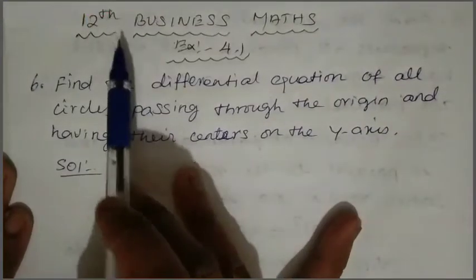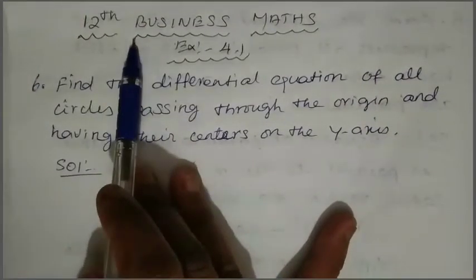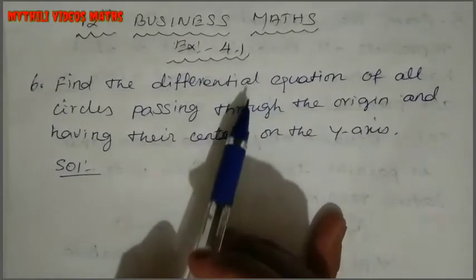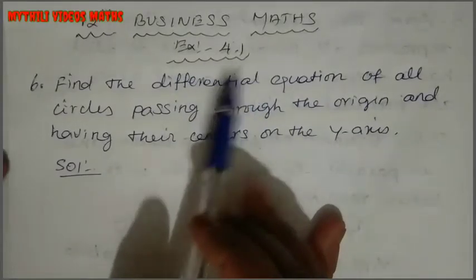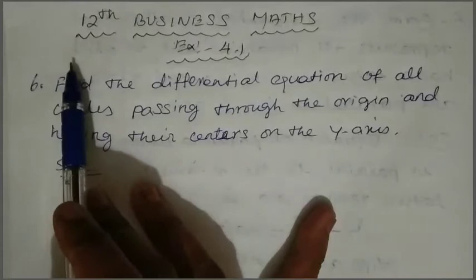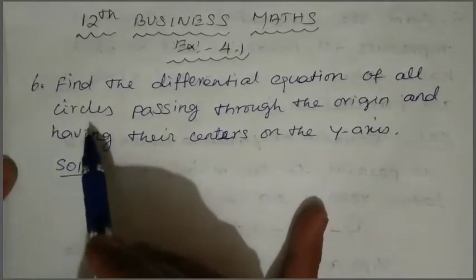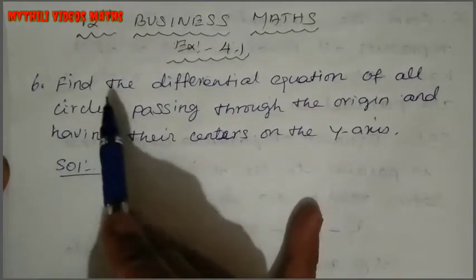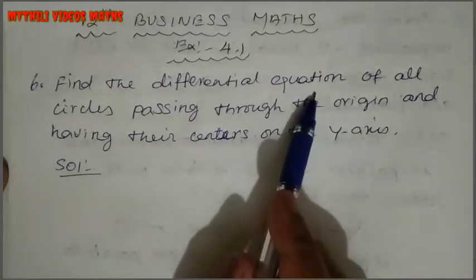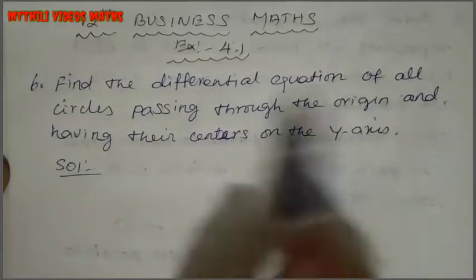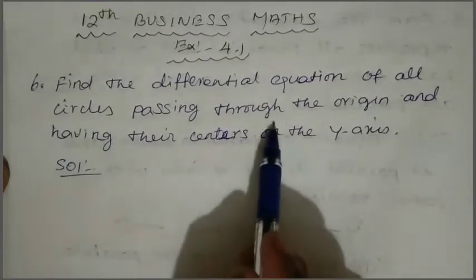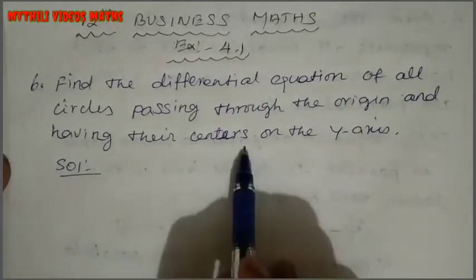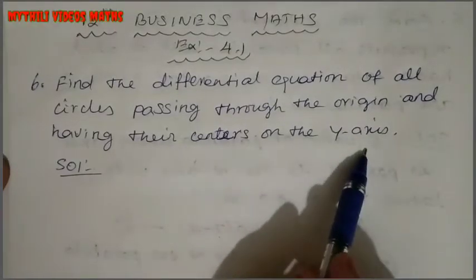Hi students, I am Ithli. This is 12th Standard Business Maths, Exercise 4.1. In Exercise 4.1 we have 5 sums already covered. Now we will see the 6th sum. The 6th sum: Find the differential equation of all circles passing through the origin and having their centers on the y-axis.